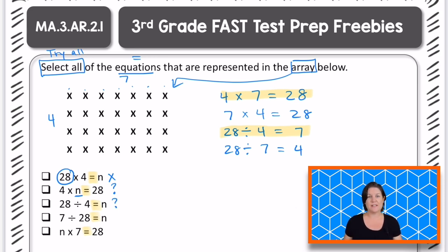The next one says 7 divided by 28. Did we have 7 total X's that we divided into 28 columns or rows? No. This right here, the 7 is not the dividend. It is not the total. This should be 28 going first. So what can we do with this one? Eliminate it or keep it? Let's eliminate it.